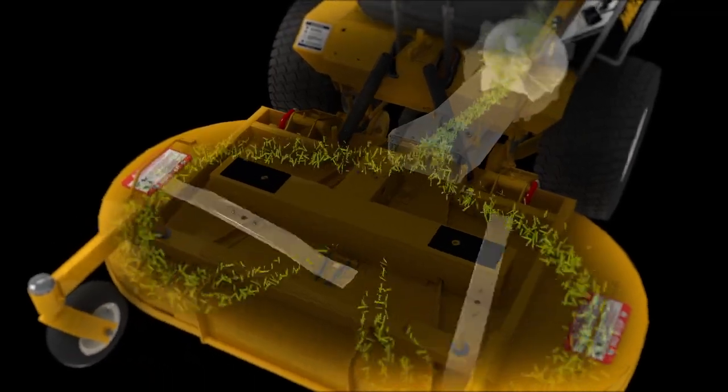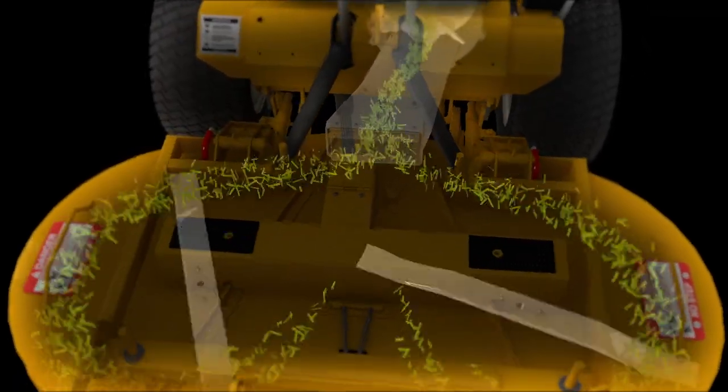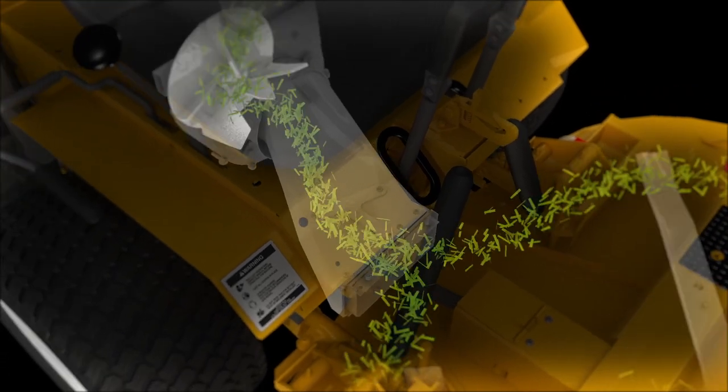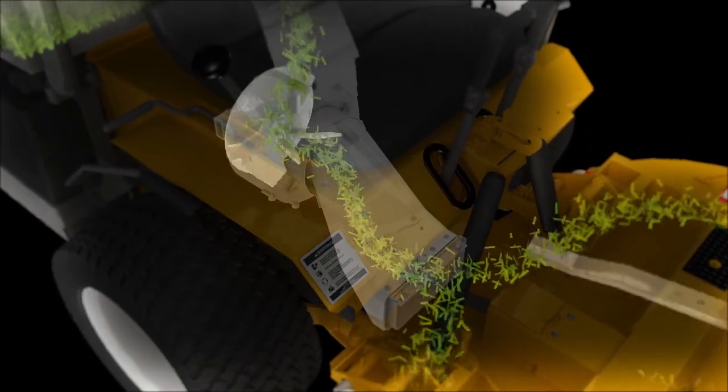As clippings and debris leave the mowing deck, they're channeled into the deck discharge chute. This custom molded polyethylene chute connects the mower deck to the GHS blower. It slides into the GHS blower, allowing for fast deck changes.